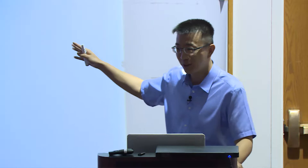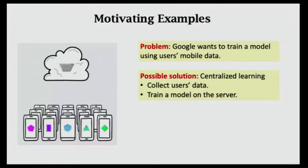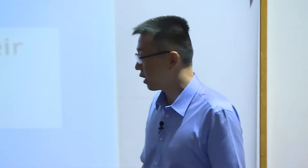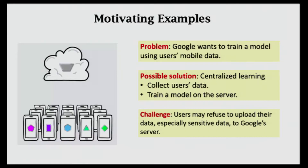What is collaborative machine learning? I would like to give two motivating examples. It's also known as federal learning, which was proposed by Google. The motivation: Google wants to train a model using users' mobile data. A straightforward solution is to collect users' data and train a model on the server. However, the challenge is if users do not want to upload their data to Google, especially sensitive data, then how can Google train such a model?